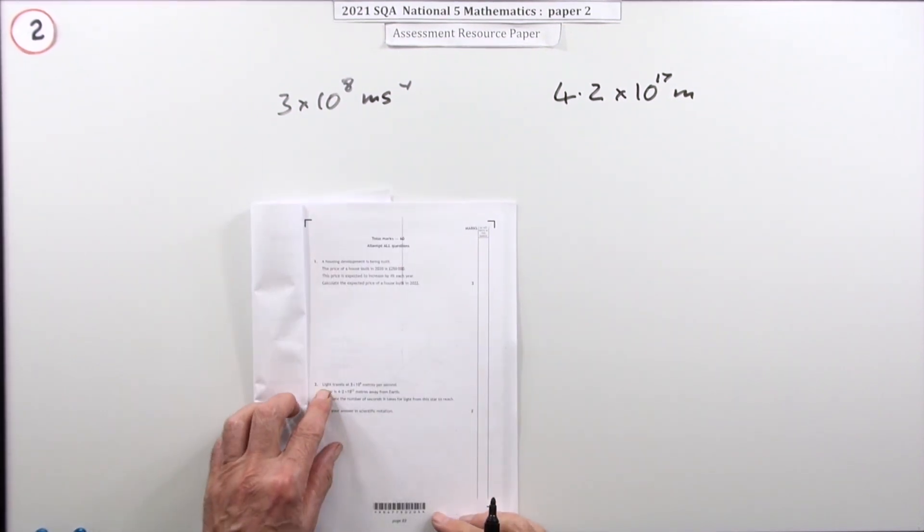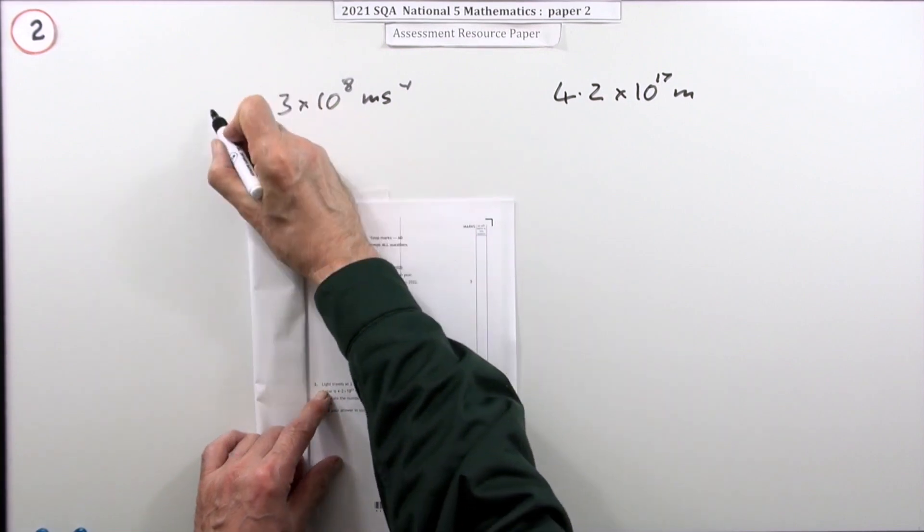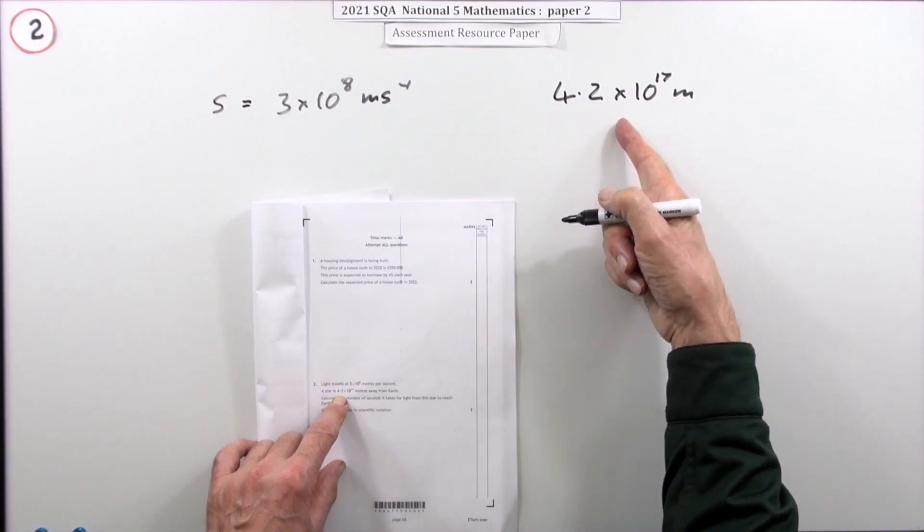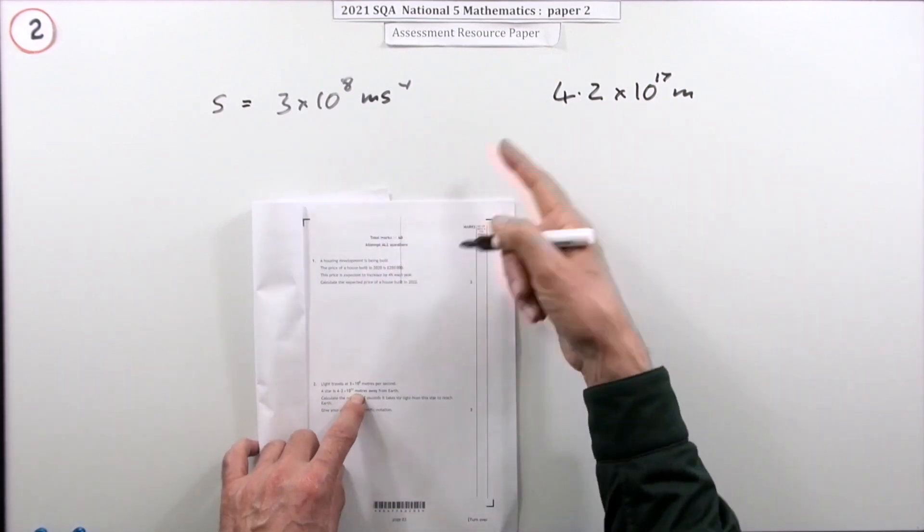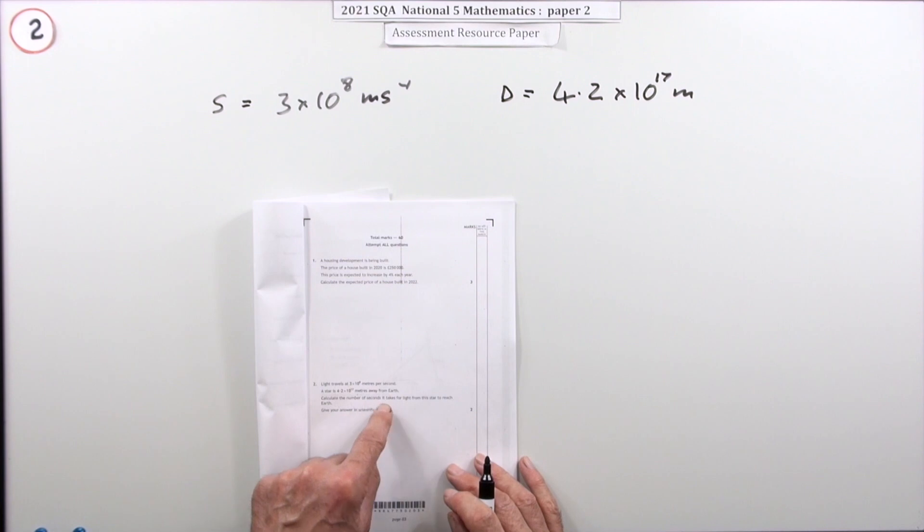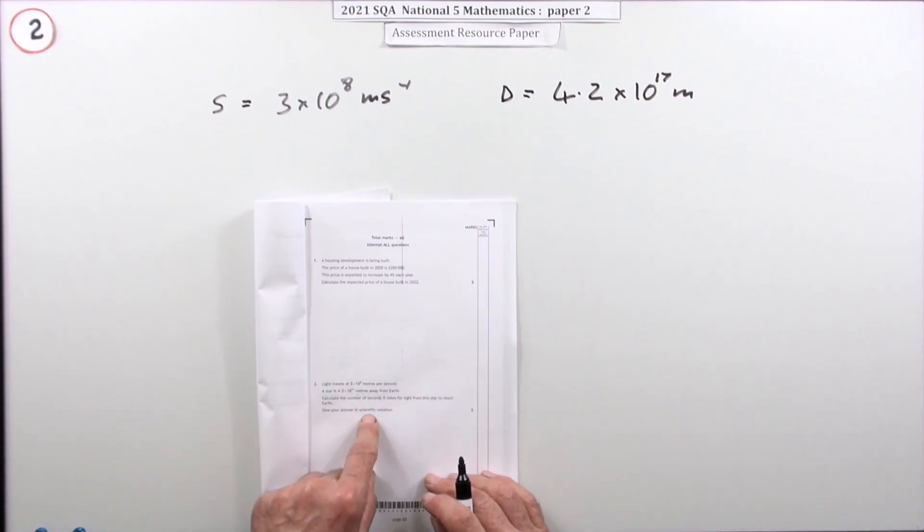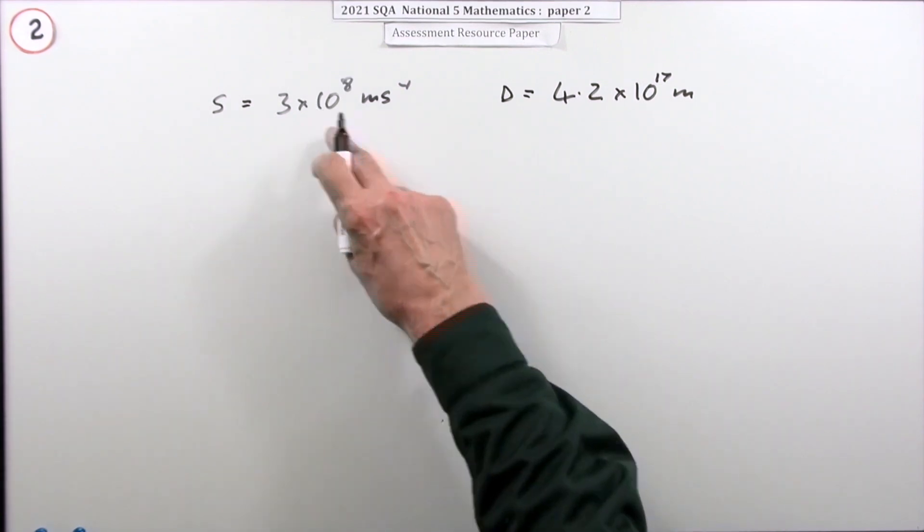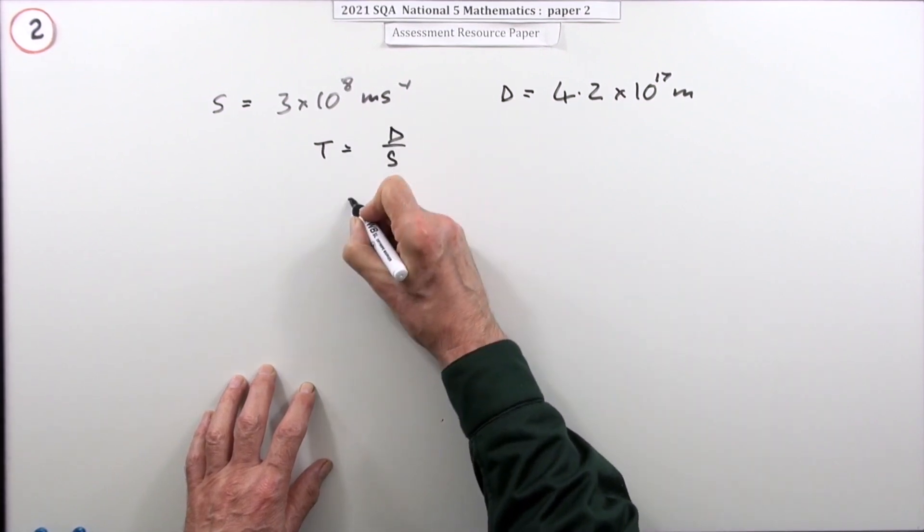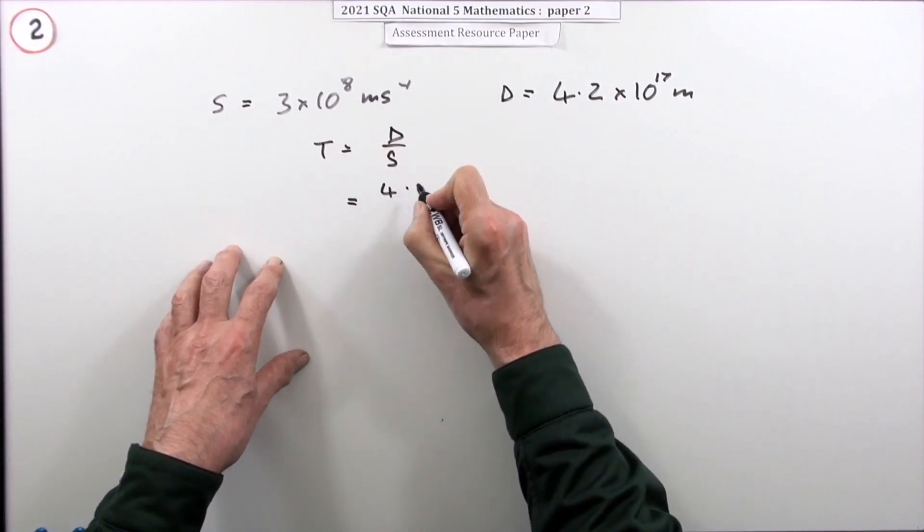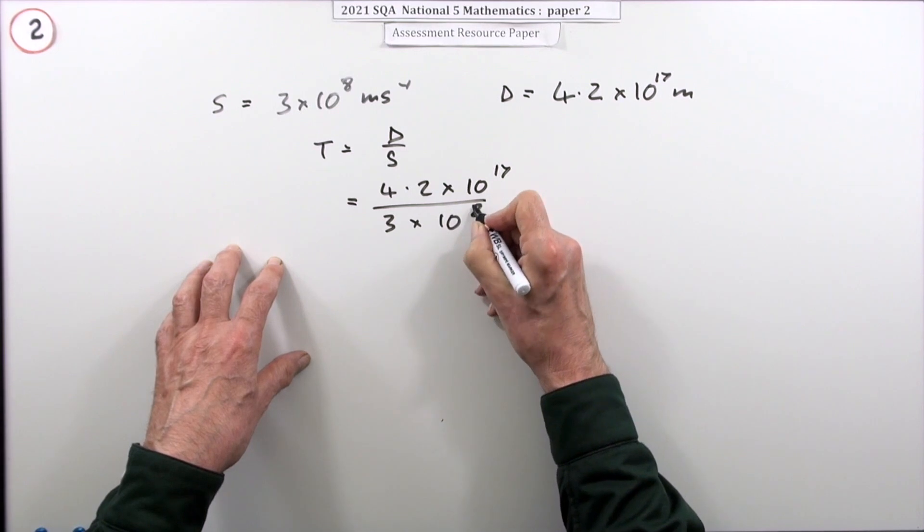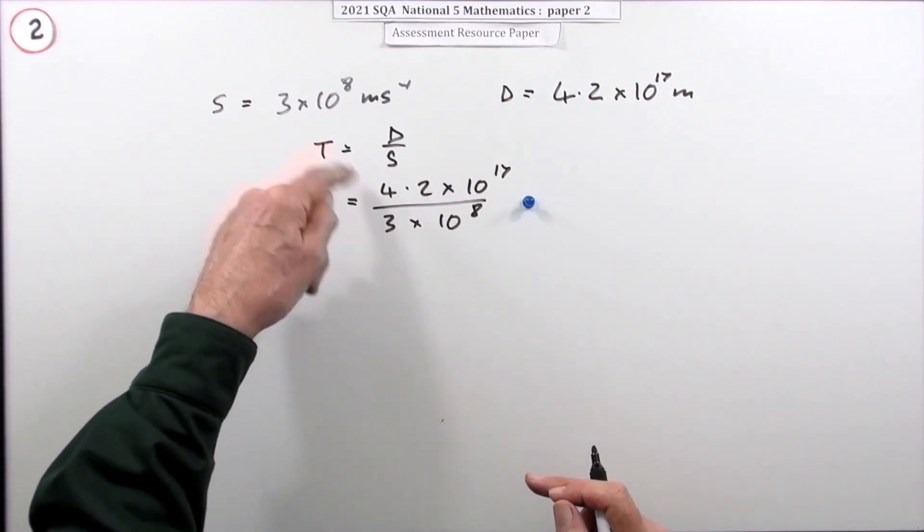Number two then. Light travels at 3×10⁸ meters per second, so I'll just call that S. A star is 4.2×10¹⁷ meters away, I'll just call that D. You have to find the number of seconds it takes for light to reach you and give your answer in scientific notation. You're given that in scientific notation to begin with. Well that's just going to be time equals distance over speed, so the time's going to be, and nothing needs changing, 4.2×10¹⁷ divided by 3×10⁸.